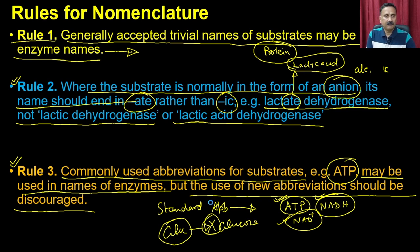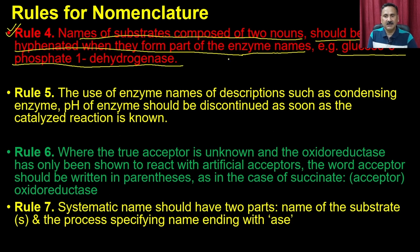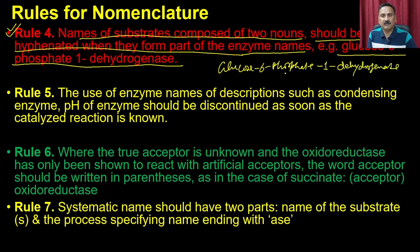Rule 4: the name of a substrate composed of two nouns should be hyphenated when forming part of the enzyme name. For example, 'glucose-6-phosphate 1-dehydrogenase' — glucose 6-phosphate as a substrate is hyphenated within the enzyme name. We cannot write 'glucose 6-phosphate dehydrogenase' without the hyphen; it must be hyphenated between the substrate name and 'dehydrogenase'.